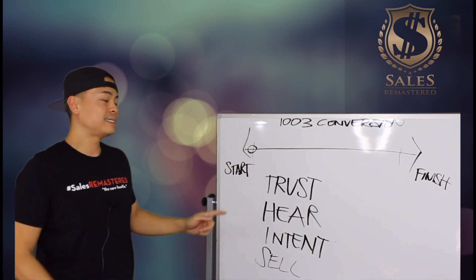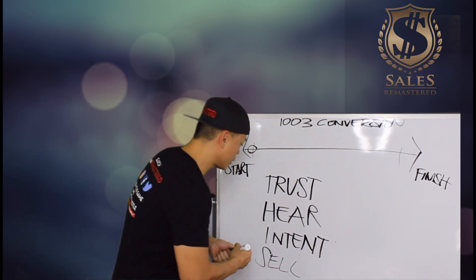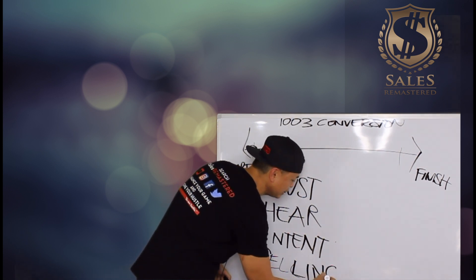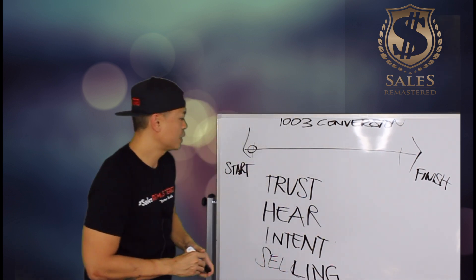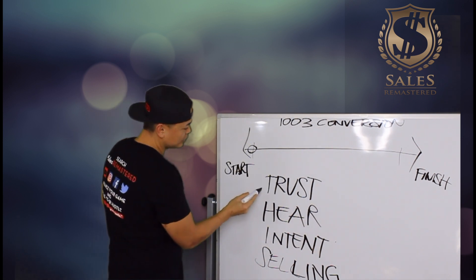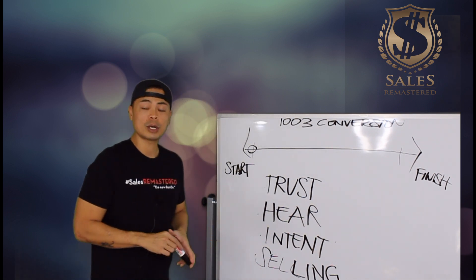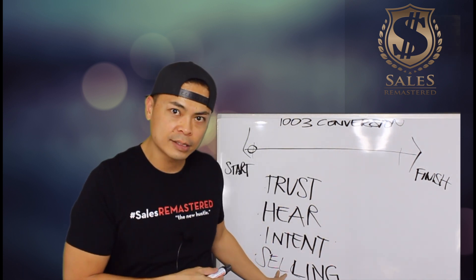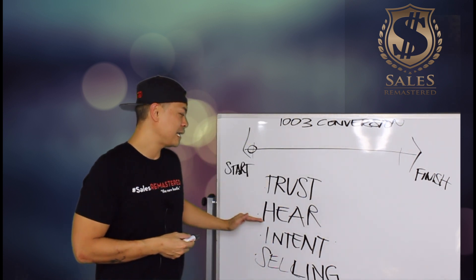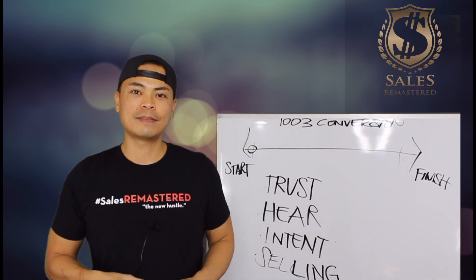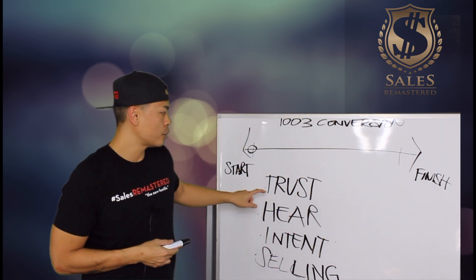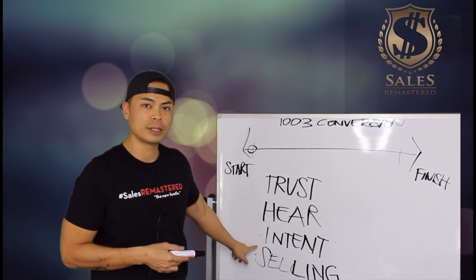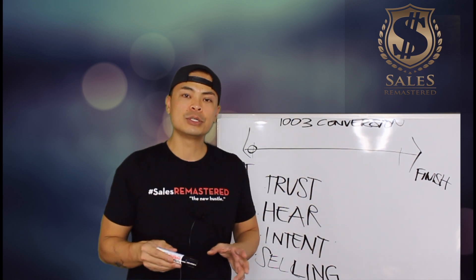The final step is Sell. You'll notice that selling is the very last piece — and ironically it spells T-H-I-S. The answer to how do I improve my sales? You do this: Trust, Hear, Intent, and then Selling. The reason selling is at the very end is because only after you earn trust, hear them out, and understand their intent can you properly sell them.